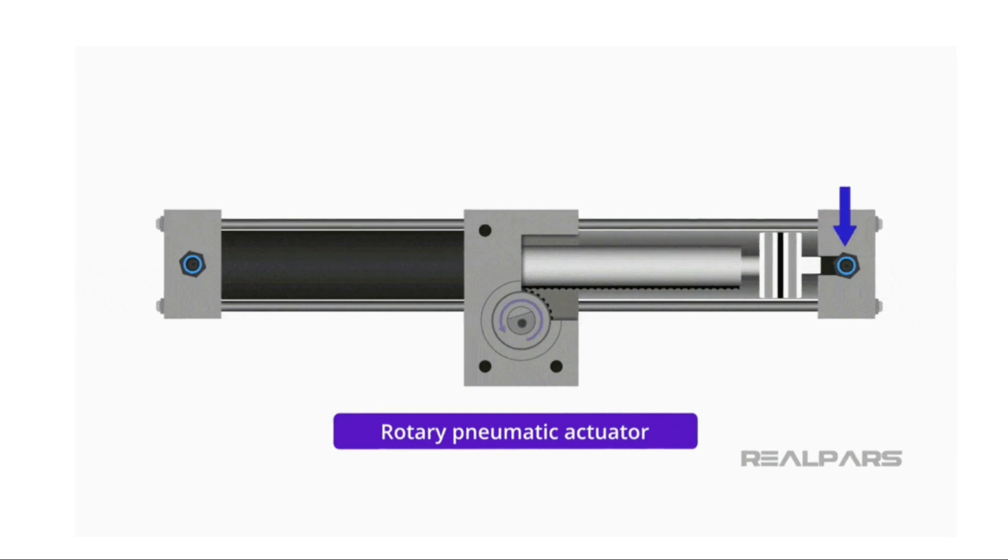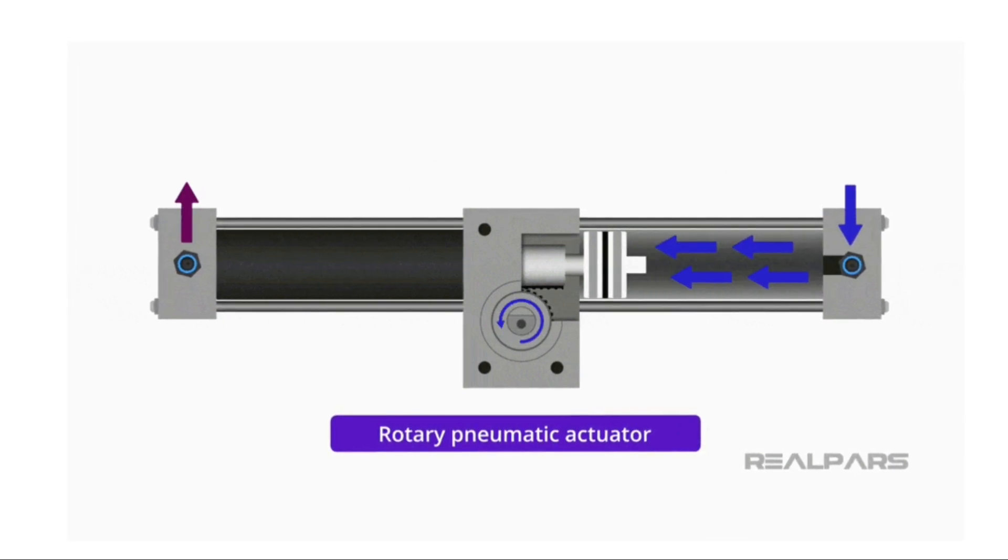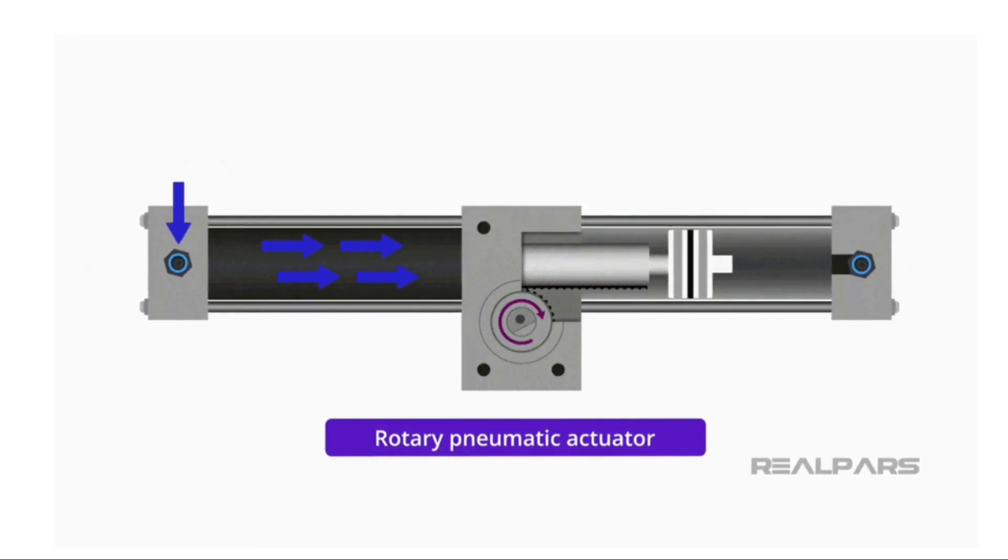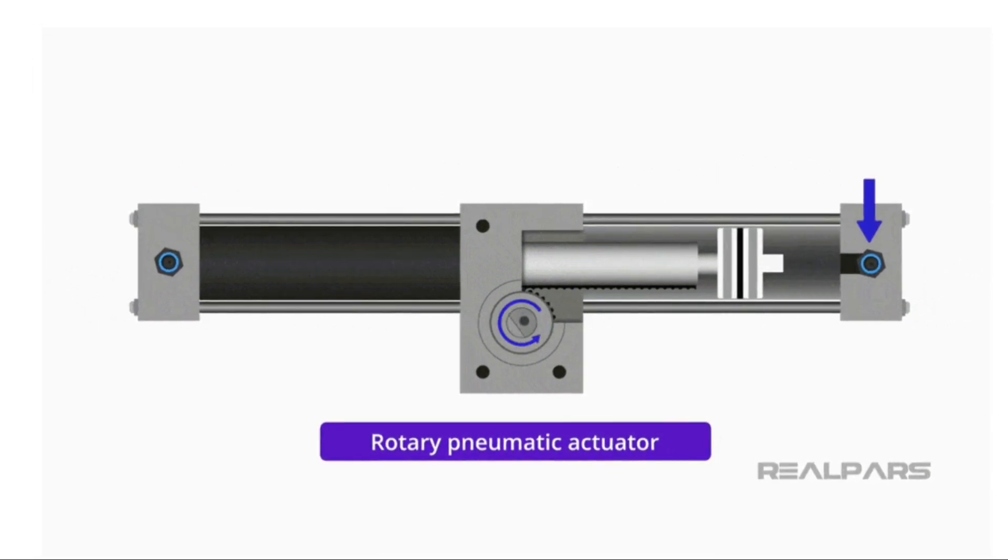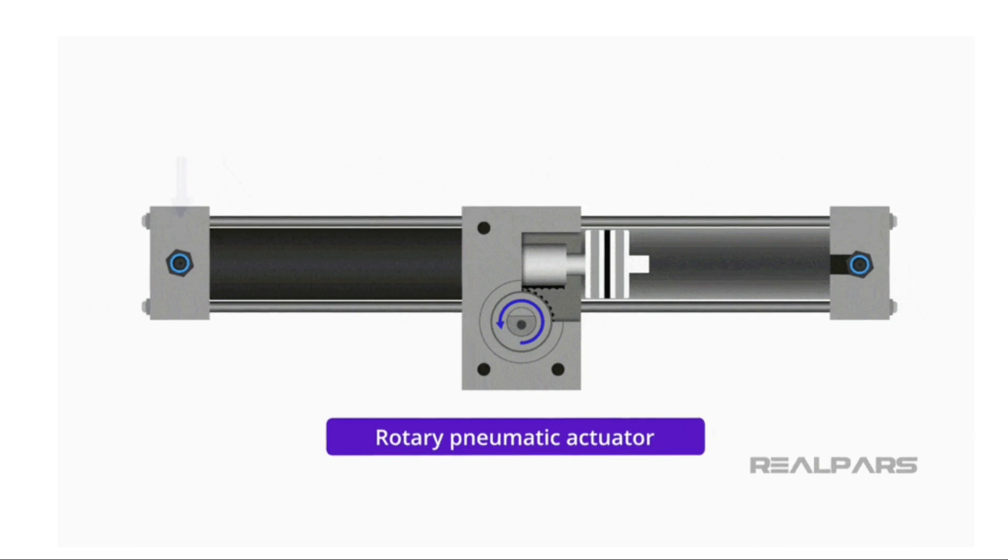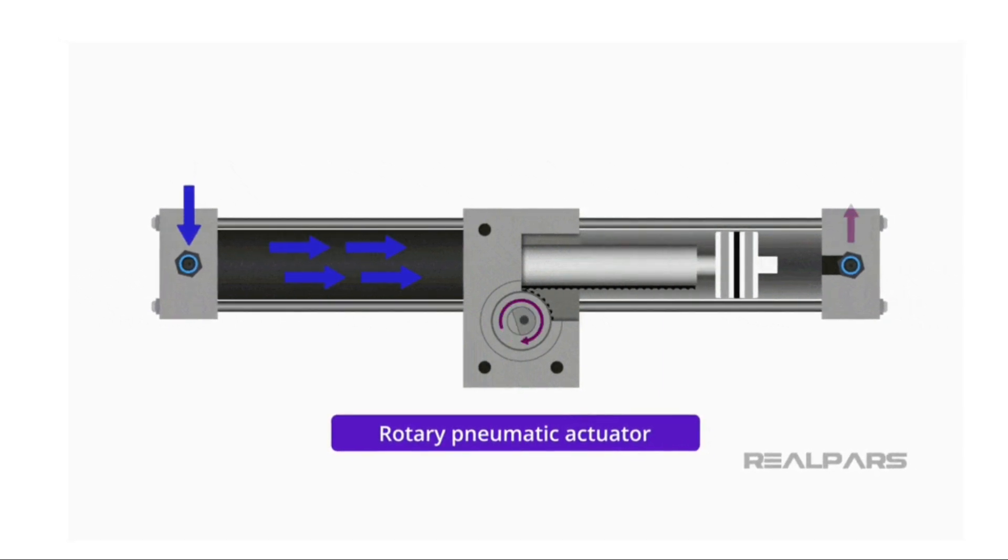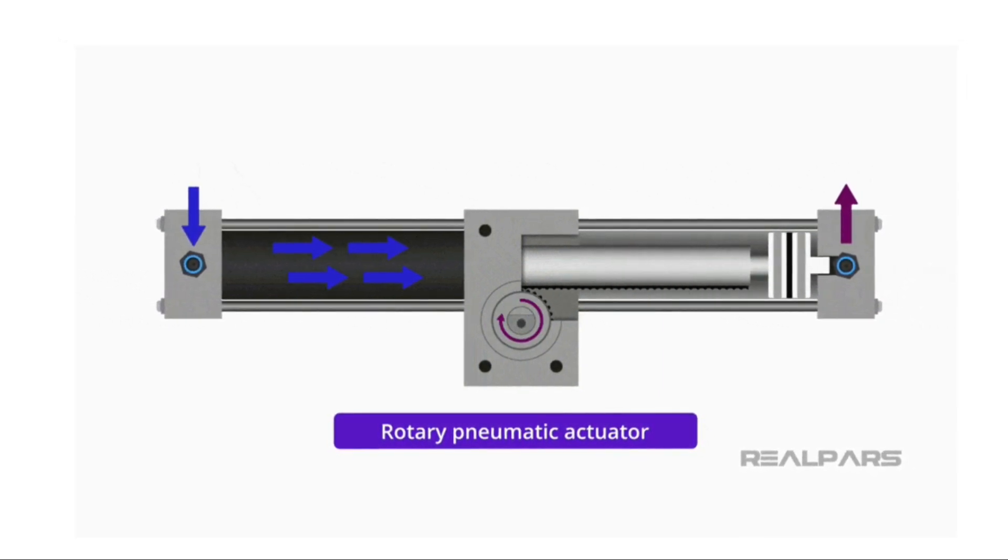A rotary pneumatic actuator can make something move in a circular motion. For example, a rod in a rack and pinion drive system is used to produce rotary motion. Let's look at some examples of how rotary and linear pneumatic actuators are operated as there are many different types of each.